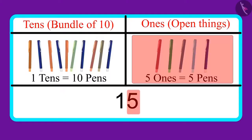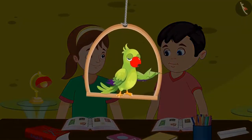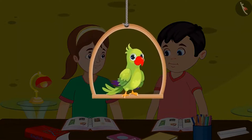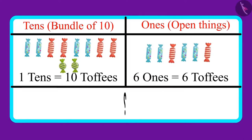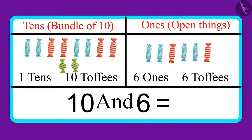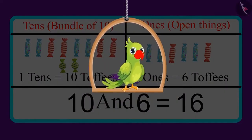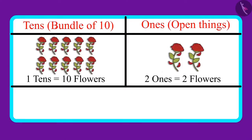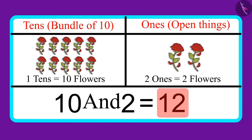This means that 1 ten and 5 ones make 15. You have understood the topic of 10s and 1s quite well. Children, have you also understood this topic properly? Let's see. These are some toffees. There are 1 ten and 6 ones in the number. Can you tell me how many toffees are there in all? 1 ten means 10 toffees and 6 ones means 6 toffees, which means these are 16 toffees. Now let's look at another example. Here are some flowers. There are 1 ten and 2 ones in the number. 1 ten means 10 flowers and 2 ones means 2 flowers — 10 and 2 — which means these are 12 flowers.